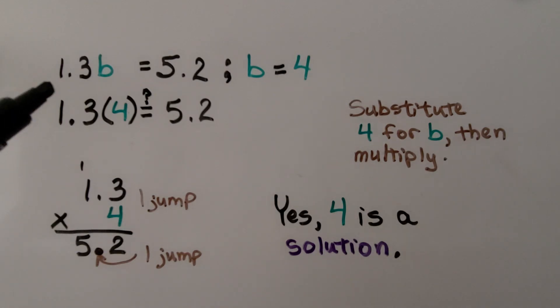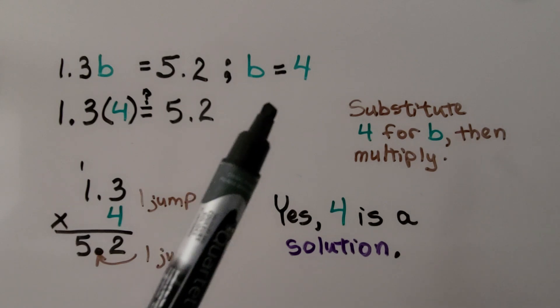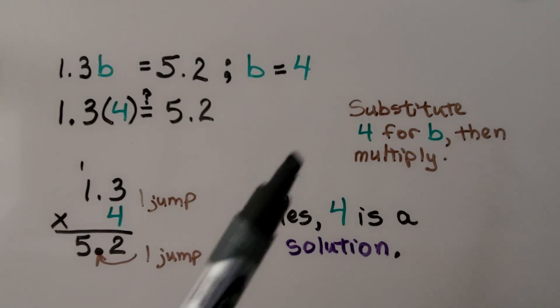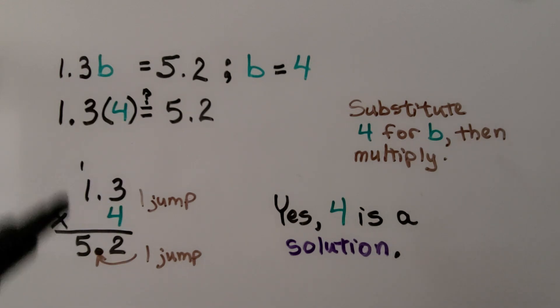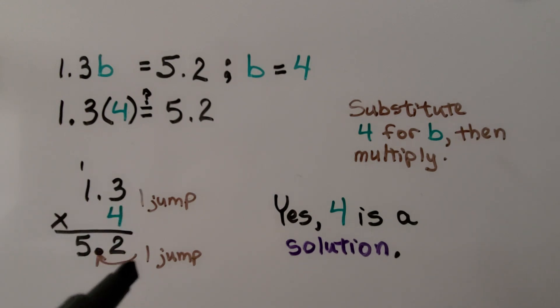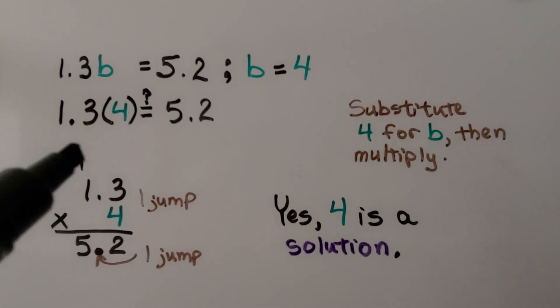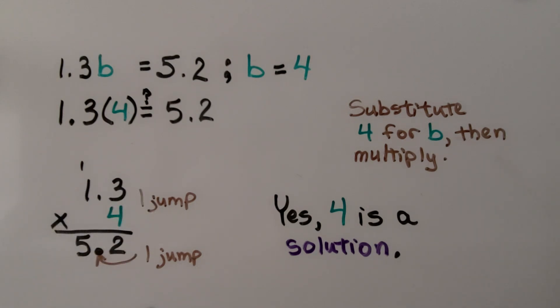Here we have one and three tenths b is equal to five and two tenths, and it's given that b is equal to four. We substitute four for b. We need to multiply, and we can stack them to multiply to make it easier. We do four times three is twelve. We regroup the one and put the two down. Four times one is four, plus one more is five. We have one decimal jump in the equation, so we're gonna have one decimal jump in the product. It is five and two tenths, so yes, four is a solution.